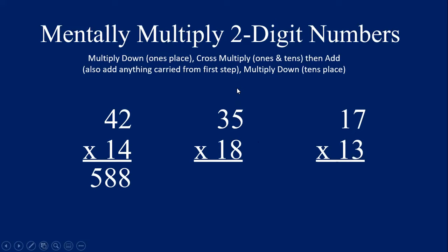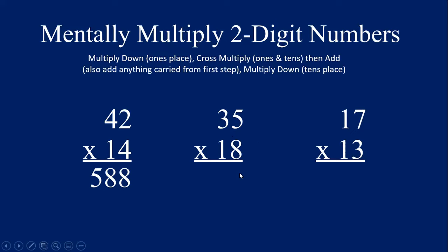Let's try 35 times 18. Multiply down: 5 times 8 is 40, so leave a 0 in the ones place and carry a 4. Cross multiply and add: 5 times 1 is 5, and 3 times 8 is 24 — so 24 plus 5 equals 29. But we carried a 4, so 29 plus 4 is 33. Put a 3 in the tens place and carry a 3. Multiply down in the tens: 3 times 1 is 3, add the carried 3 — so 3 plus 3 is 6. Our answer is 6, 3, 0 — 630 is the correct answer.